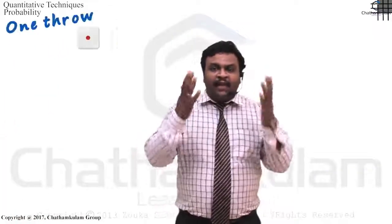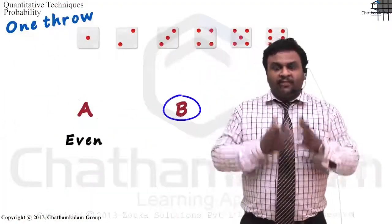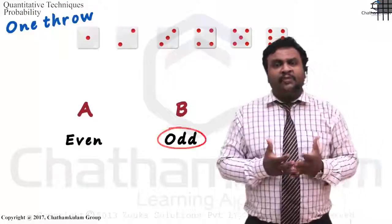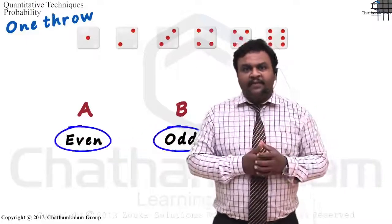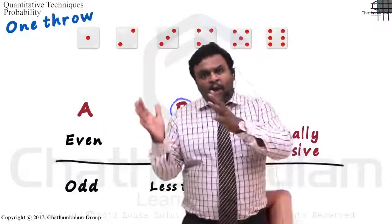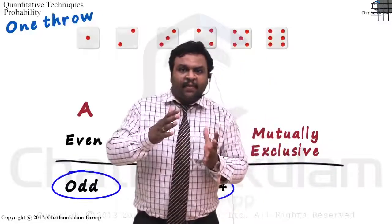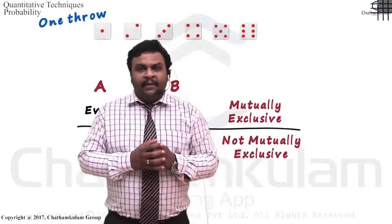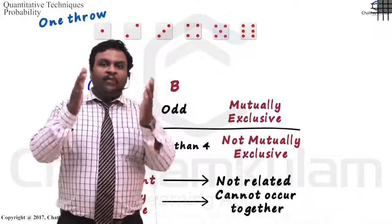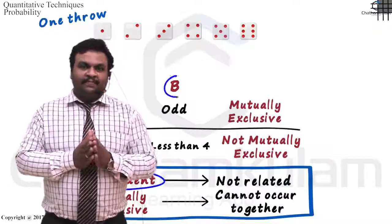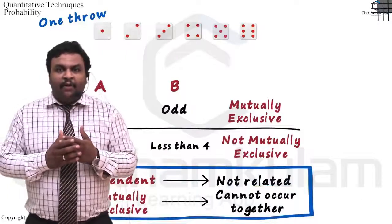Next we can discuss what is meant by mutually exclusive events, which is very important for solving many problems related to probability. Mutually exclusive events means if one event prevents all other events, they are called mutually exclusive events. For example, when we are tossing a coin, the probability of getting head prevents the probability of getting tail, and vice versa. This is the example for mutually exclusive events.